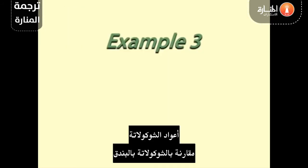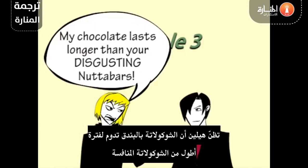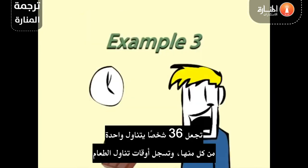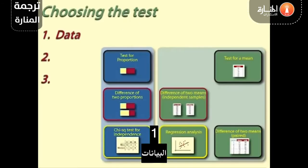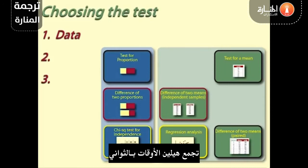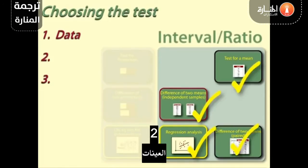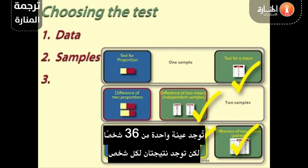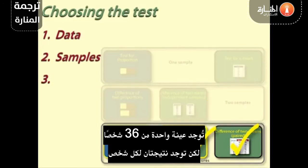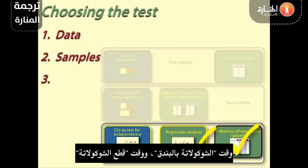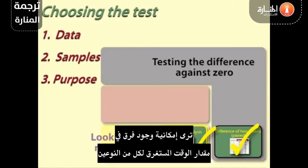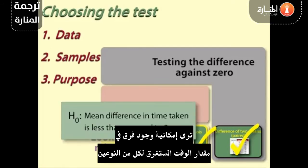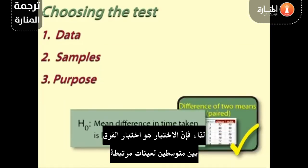Example 3: Bar longevity compared with nutter bars. Helen thinks her choc-a-nutties last longer than the competition nutter bars. She gets 36 people to eat one of each and records their eating times. 1. Data: Helen collects times taken in seconds, so this is interval ratio data. 2. Samples: There is one sample of 36 people, but with two scores for each person — the time for the choc-a-nutty and the time for the nutter bar. 3. Purpose: She is looking at whether there is a difference in the amount of time taken for each of the bars. Thus, the test is difference of two means paired sample.